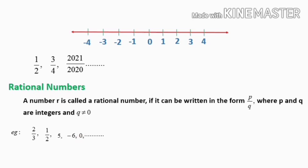0 is also a rational number because we can represent 0 as 0/1, 0/2, 0/3, and so on — all in p/q form. So 0 is also a rational number. In the classification of numbers, so far we have learnt about natural numbers, whole numbers, integers, and rational numbers. Rational numbers include integers; integers include whole numbers; whole numbers include natural numbers.